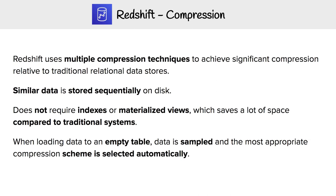Compression is one of the most important factors for Redshift's speed. Redshift uses multiple compression techniques to achieve significant compression relative to traditional relational data stores. Similar data is stored sequentially on disk, and it does not require indexes or materialized views, which saves a lot of space. When loading data into an empty table, data is sampled and the most appropriate compression scheme is selected automatically.